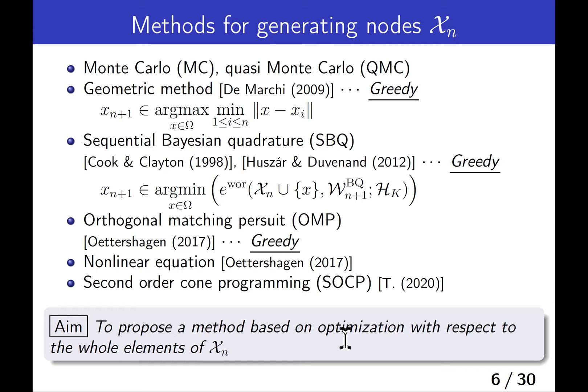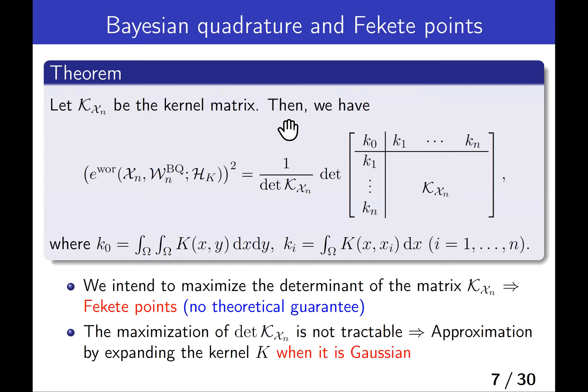To this end, we focus on the fact that the worst-case error is given by the ratio of determinants. We can derive this expression by some fundamental formulas in linear algebra. Since the denominator is given by the determinant of the kernel matrix, we intend to maximize the determinant of this matrix, which leads to the fekete points. Although there is no theoretical guarantee that this choice is ideal.